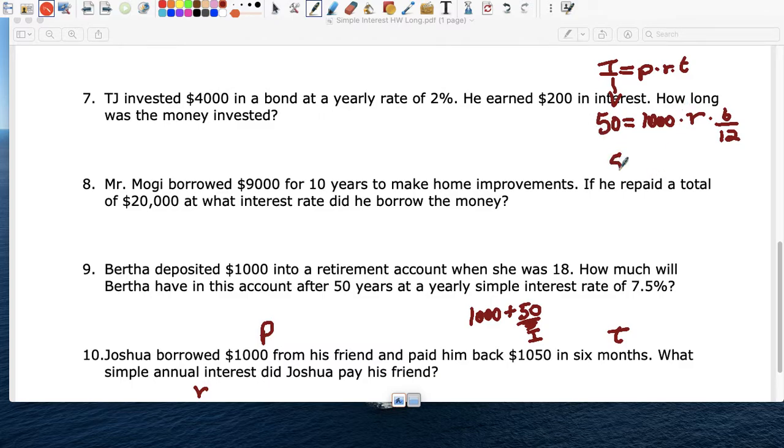We can put that in your calculator, right? 50 equals, and you multiply 1,000 times 6 over 12, which is 500 times R. Divide by 500. Divide by 500.